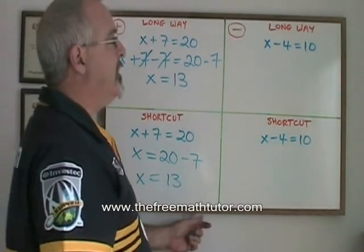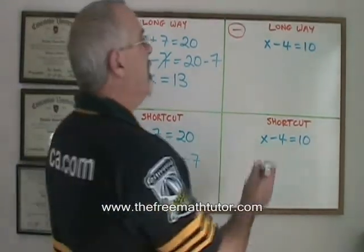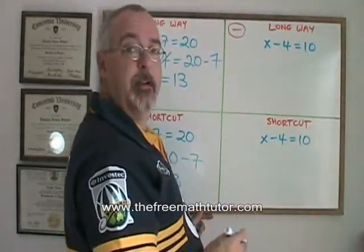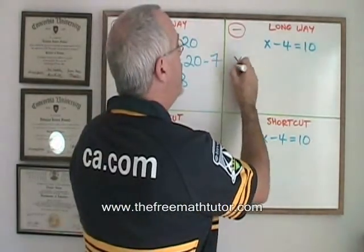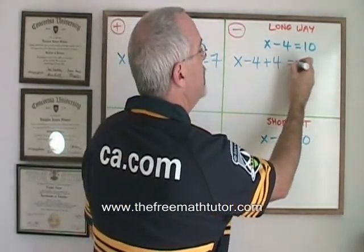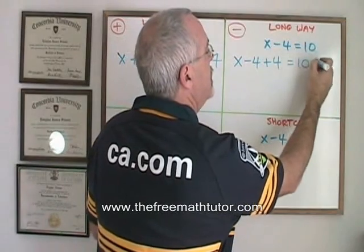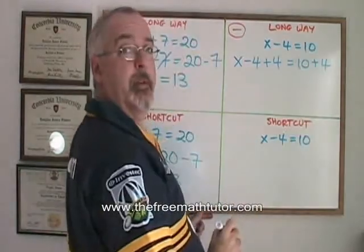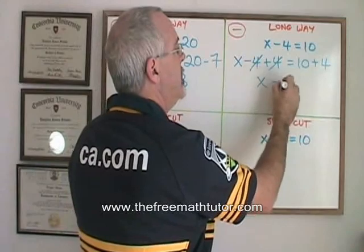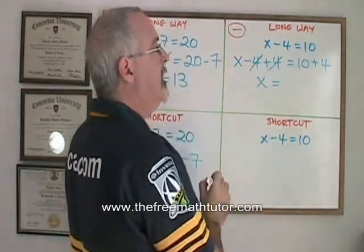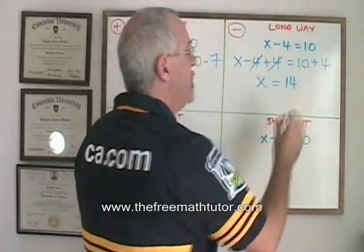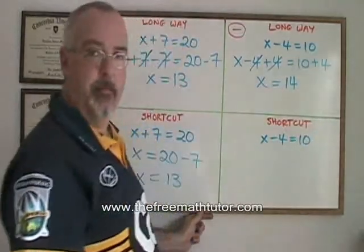With subtraction, it works the same way. The long way, since I am having a 4 subtracted from my x, is to show that I add a 4 on both sides of the equation. The 4s on the left cancel, and that isolates my x. x is equal to 10 plus 4, which is 14. I have my answer.